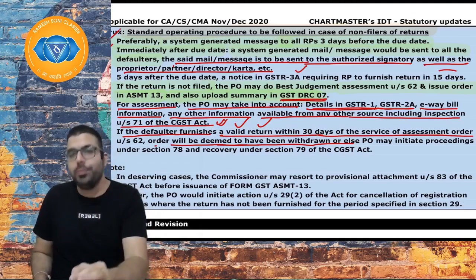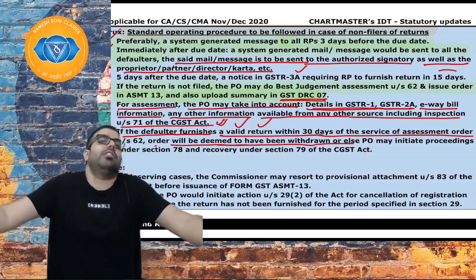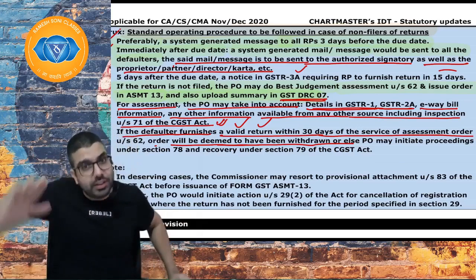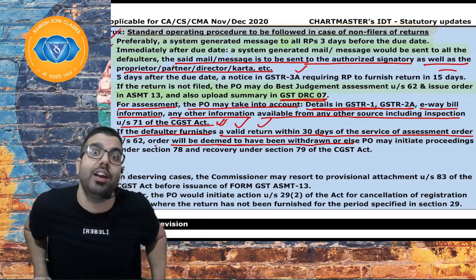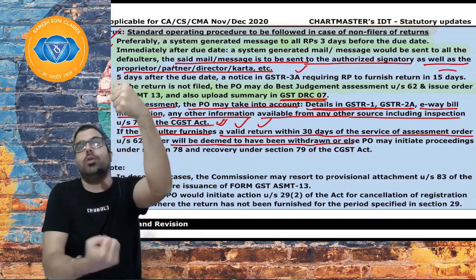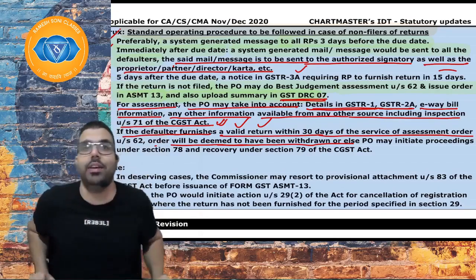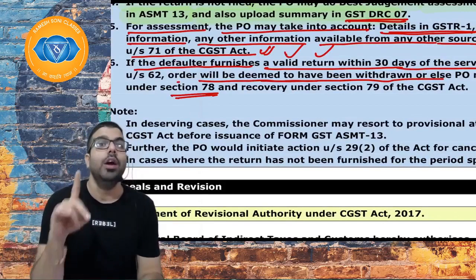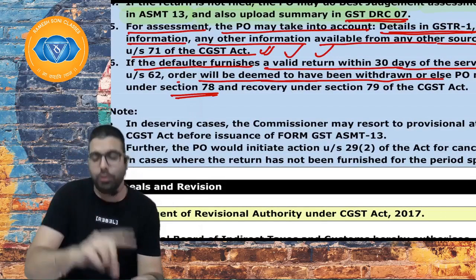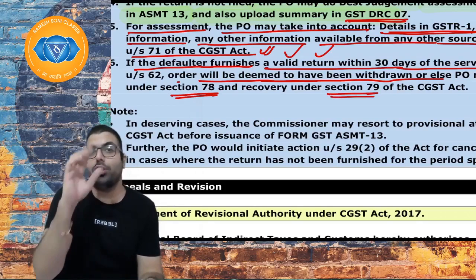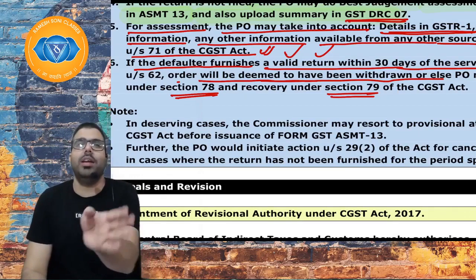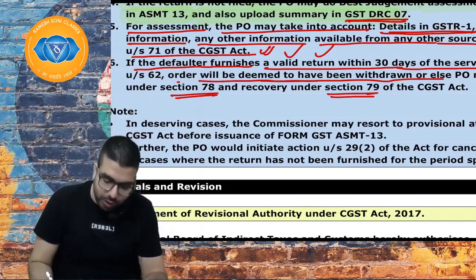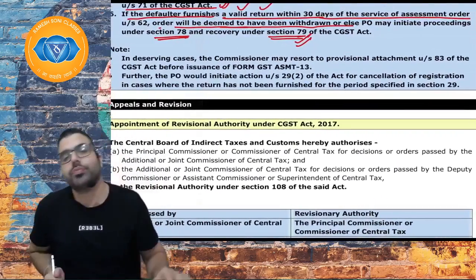If you don't make the payment within 30 days, they will initiate recovery proceedings under sections 78 and 79. Section 78 says within three months of the service of the notice, they will start recovery proceedings. Alternatively, you can go for an appeal. Section 79 covers how they recover — garnishment, sale of movable or immovable property, etc.